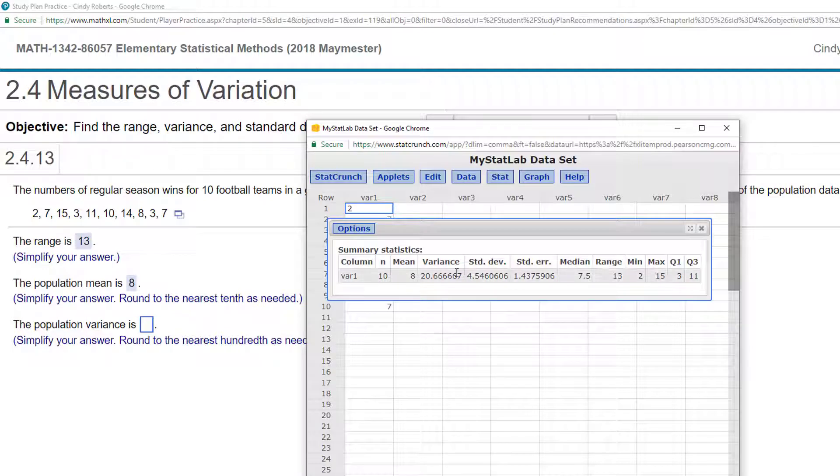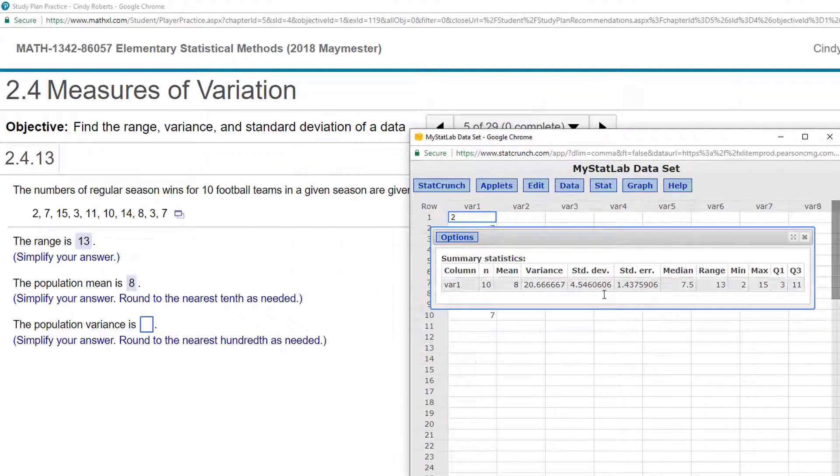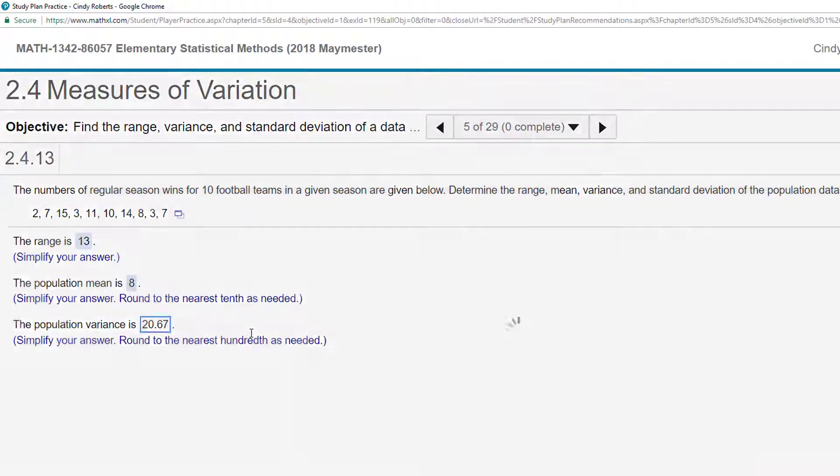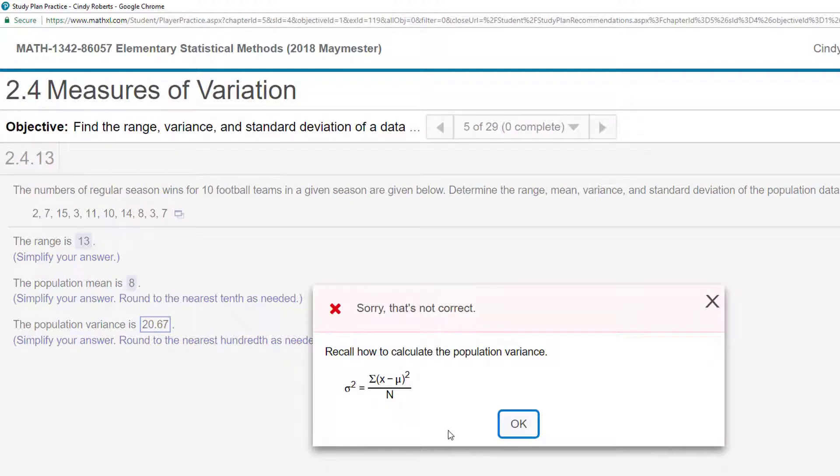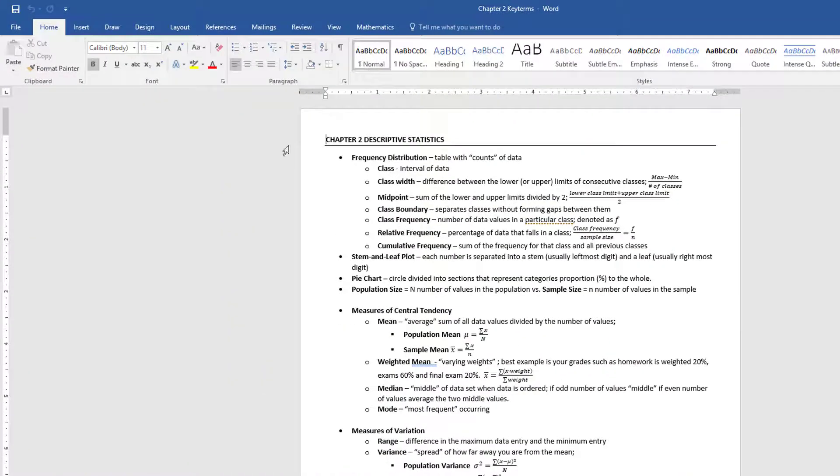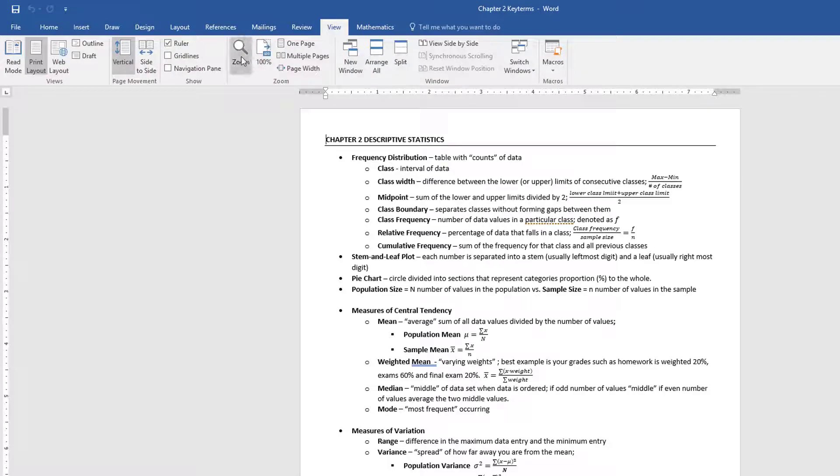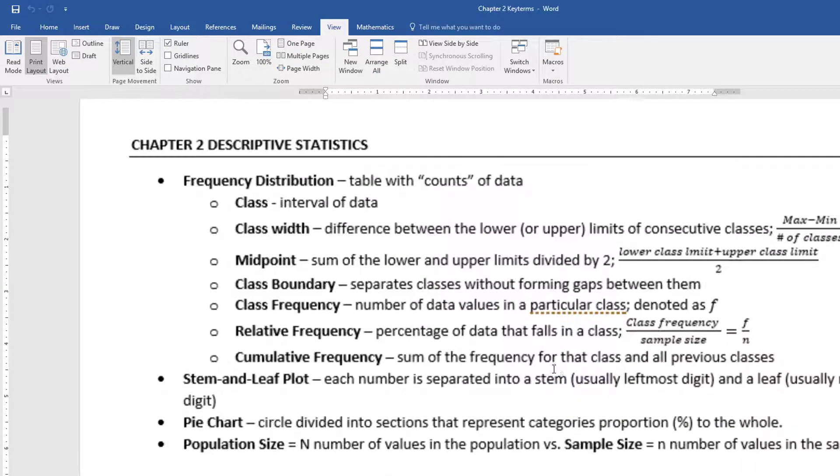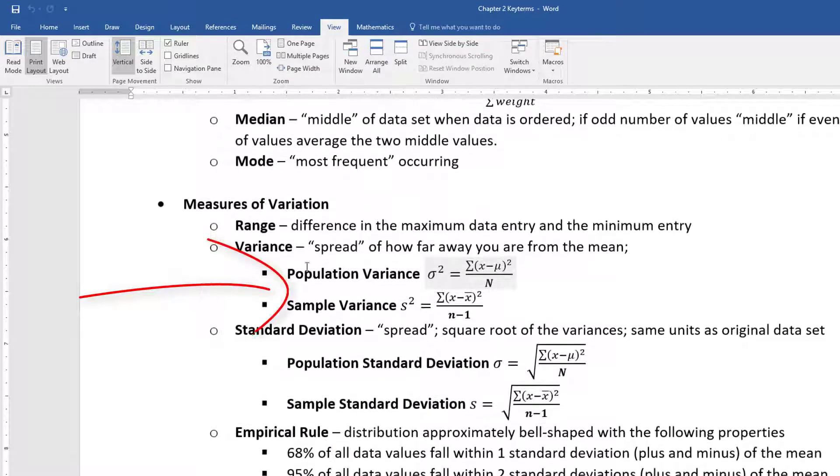So the population variance. I see variance, and it says round to the nearest hundredth. Do you remember that? Tens, hundreds, two decimal places? So 20.67. If you remember and you look on our formula sheet, let's make it bigger for my blind eyes, is the variance, the population variance versus the sample variance.